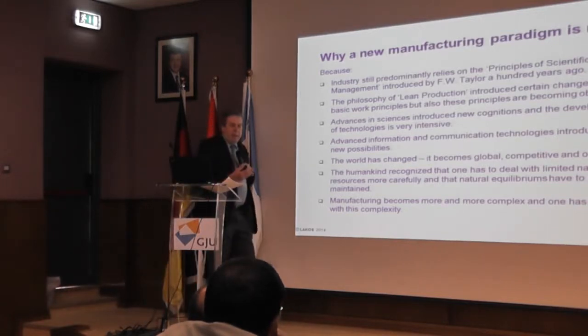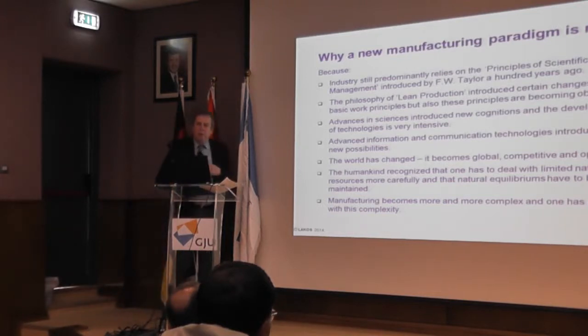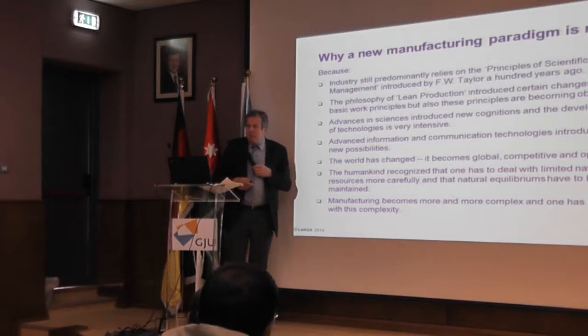Looking ahead at this new perspective for manufacturing, we need to understand why a paradigm shift is necessary. A lot of industries are still working on the basis of old Taylorian principles of scientific management, which were very good for the beginning of industrialization but have to be replaced. We also know that the philosophy of lean production, developed by Japanese car manufacturers in the 70s, influenced a lot of European and other industries. Everybody is now talking about lean and sustainable manufacturing.